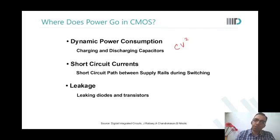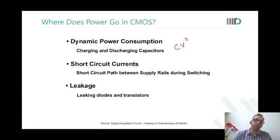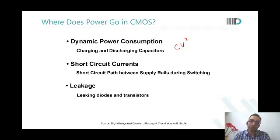What about short circuit currents? As observed during static analysis, there is a point when both transistors are in saturation. A short circuit path exists between VDD and ground during switching — that is called short circuit current. The third component of power is leakage.